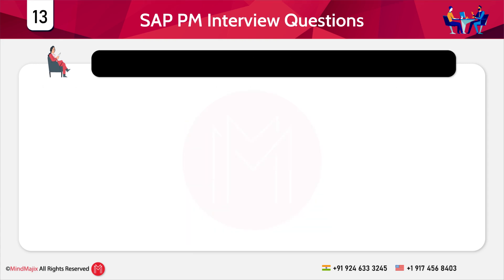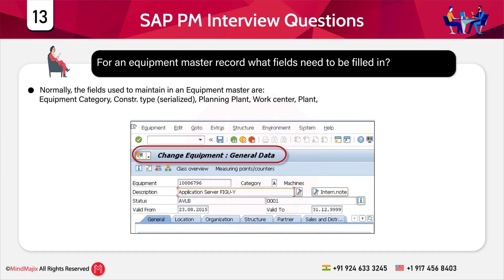For an equipment master record, what fields need to be filled in? This is a subjective question and depends on the equipment in use. Normally the fields used to maintain the equipment master are: equipment category, construction type, planning plant, work center, plant maintenance plant, and location. You can attach equipment to another using the superior equipment field.